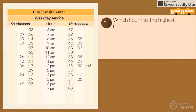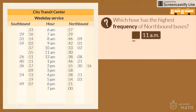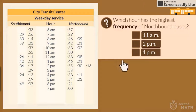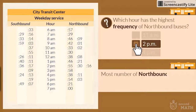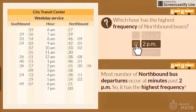Which hour has the highest frequency of northbound buses — 11 a.m., 2 p.m., or 4 p.m.? Most northbound bus departures occur at minutes past 2 p.m., so it has the highest frequency.